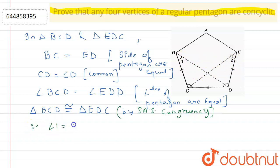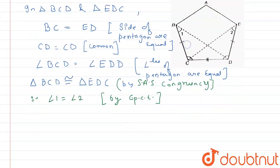Therefore angle 1 equals angle 2 by CPCT. Since these angles are equal, they are subtended by CD on the same side, so points B, C, D, E are concyclic.